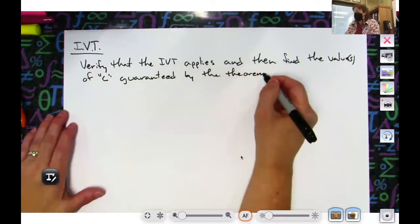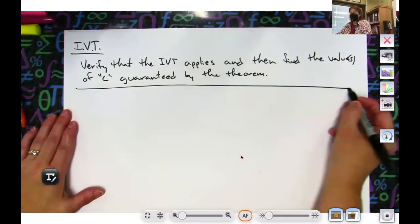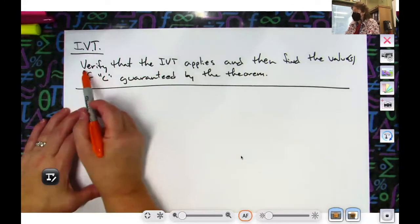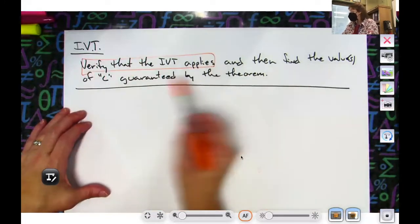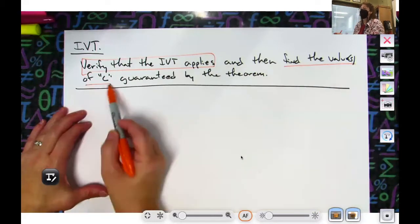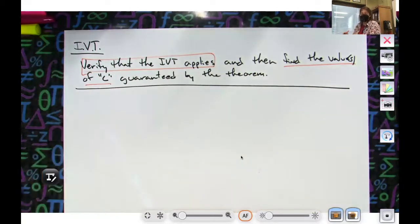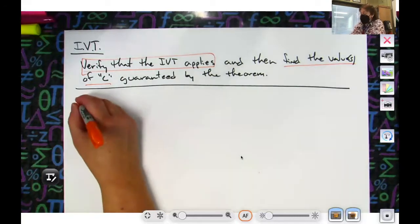So I think the main part is you conceptually have to understand they're asking you to do two things. They're asking you to verify—that's one thing—but then they're also asking you to find the values of C. That's the second part, so it's a two-part question.